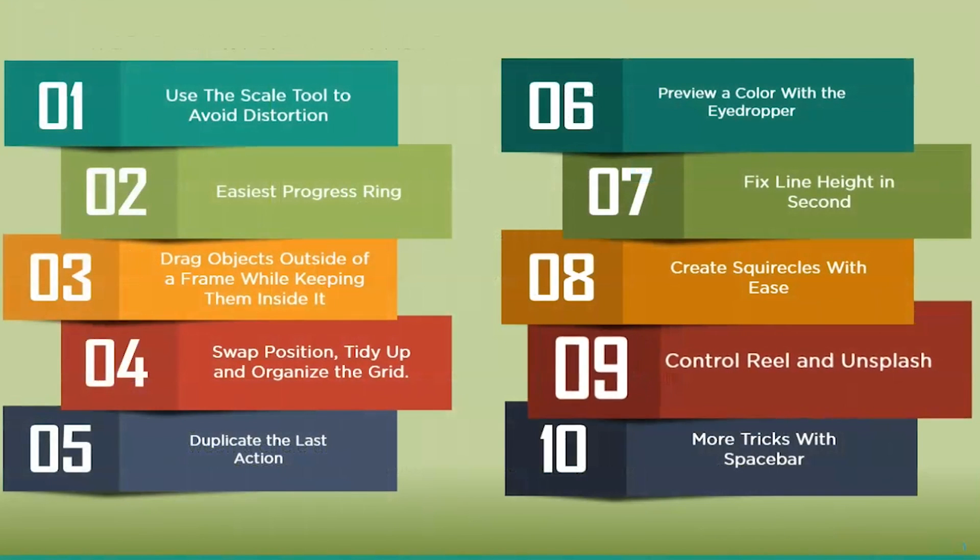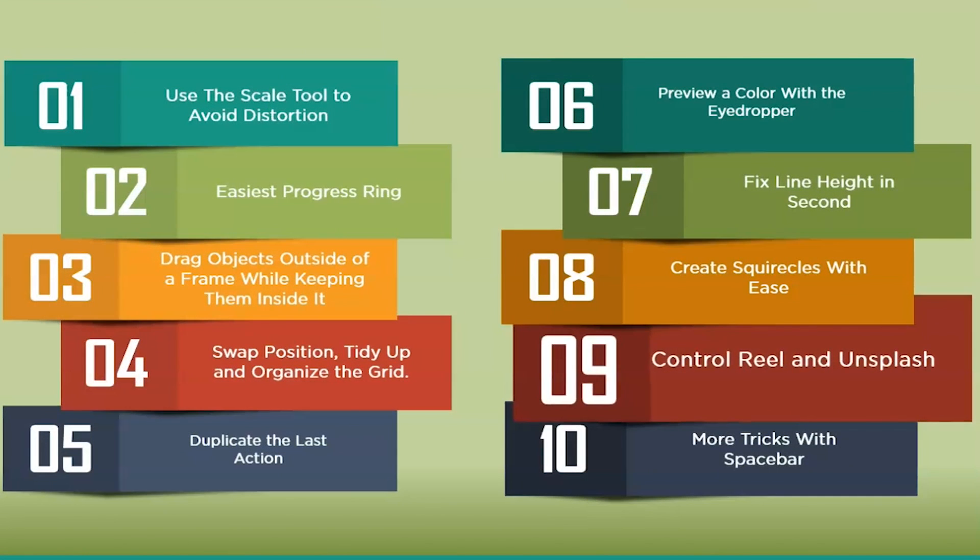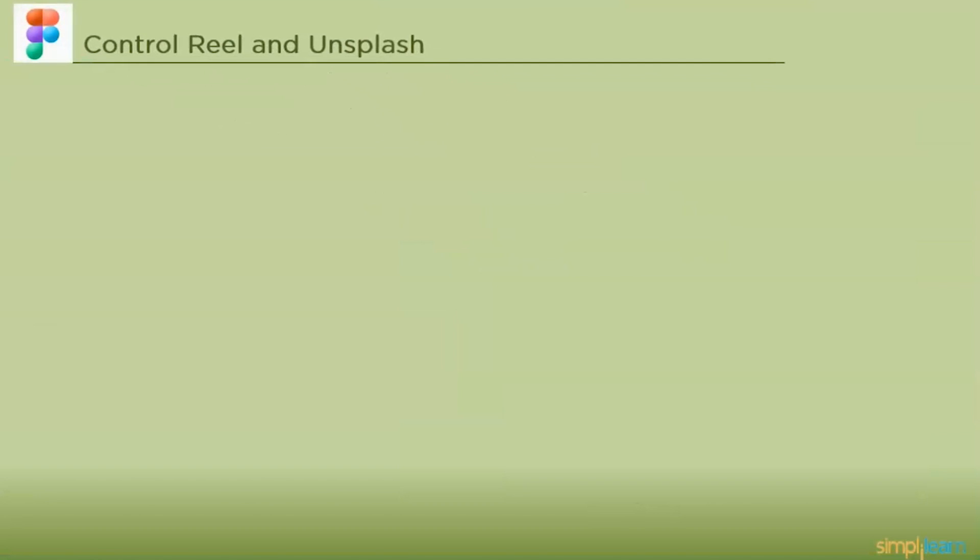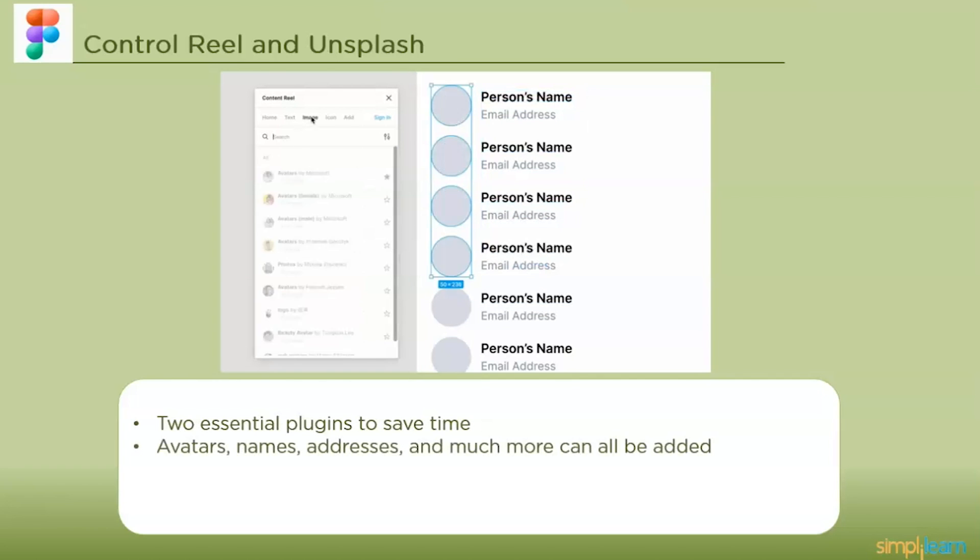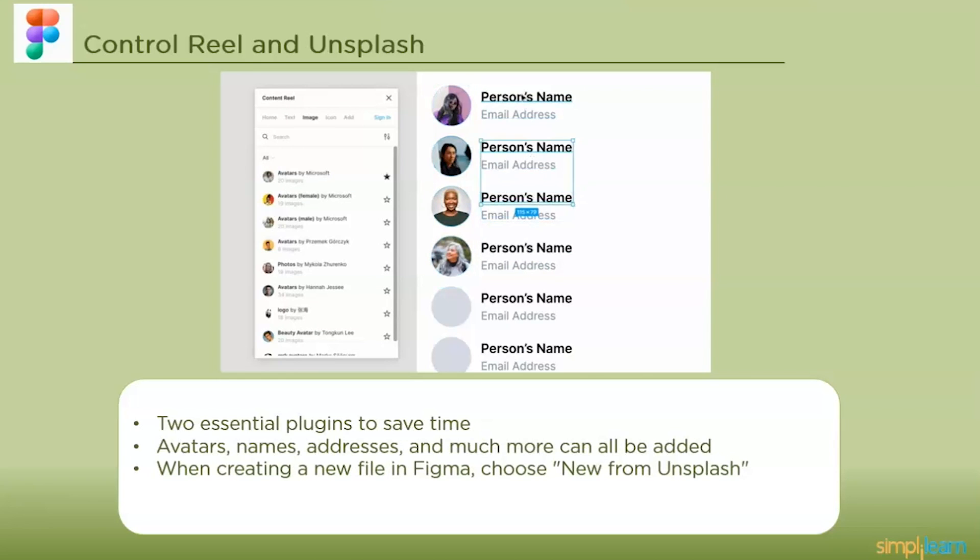The next one is control reels and Unsplash. Two essential plugins to save time are content reel and Unsplash. Avatars, names, addresses and much more can be added to your design with just one click thanks to content reel. A free resource for high quality graphics is Unsplash. When creating a new file in Figma, choose new from Unsplash to use Unsplash images. This will launch a photo library that you can look through and utilize for your design.